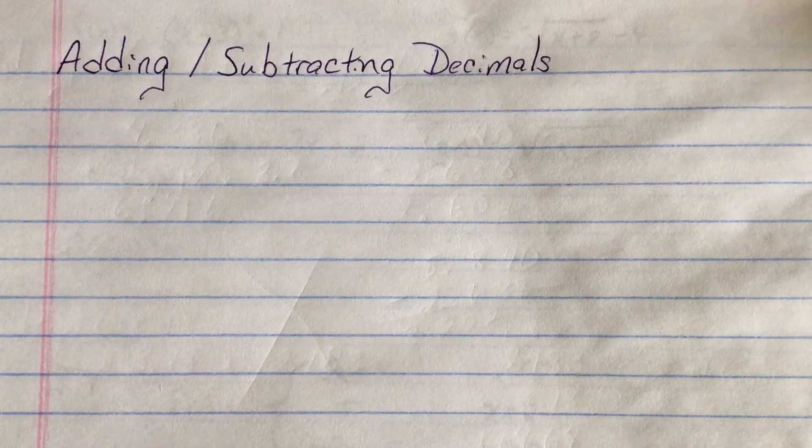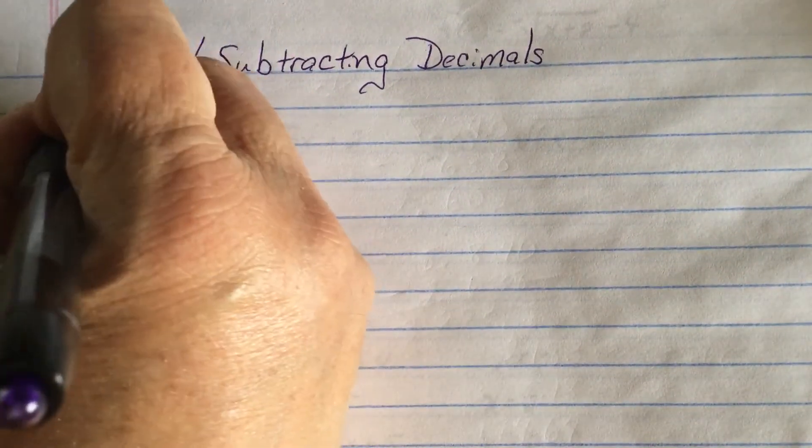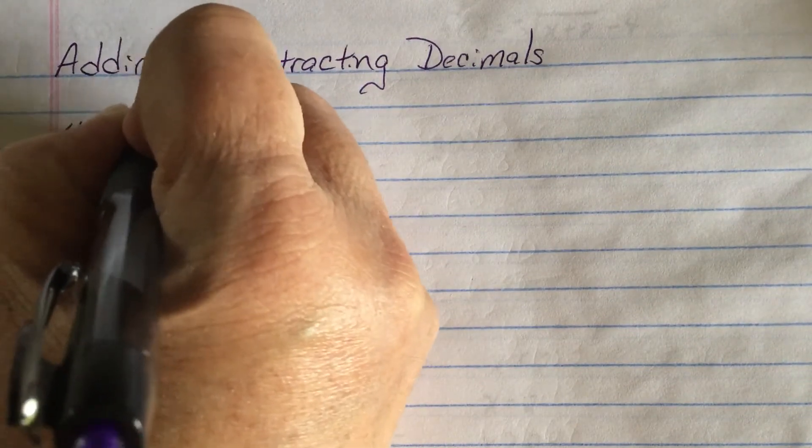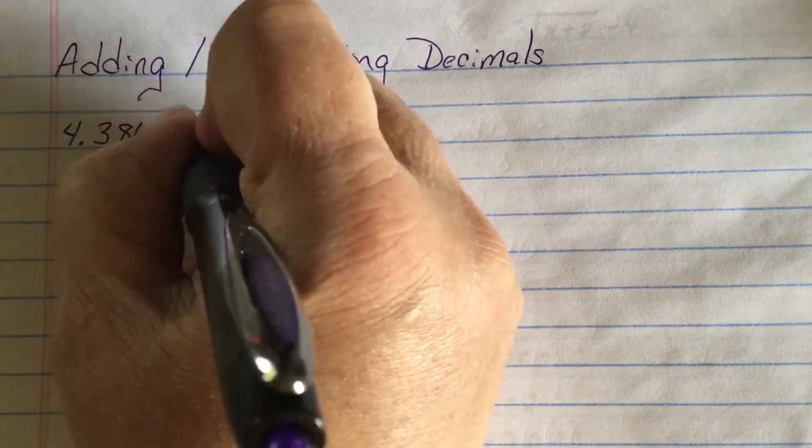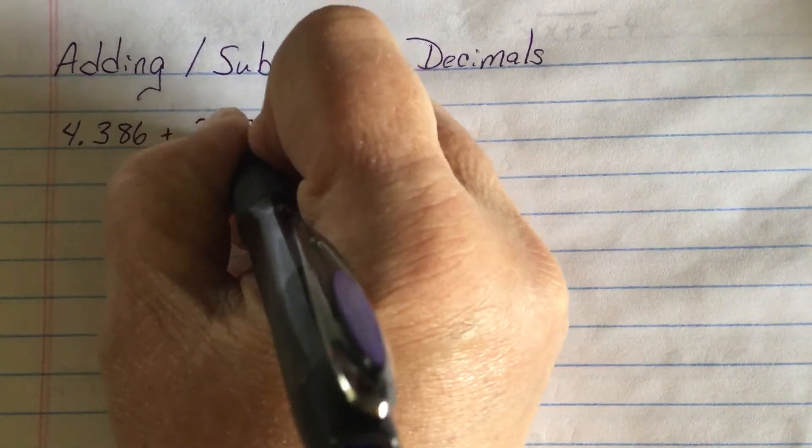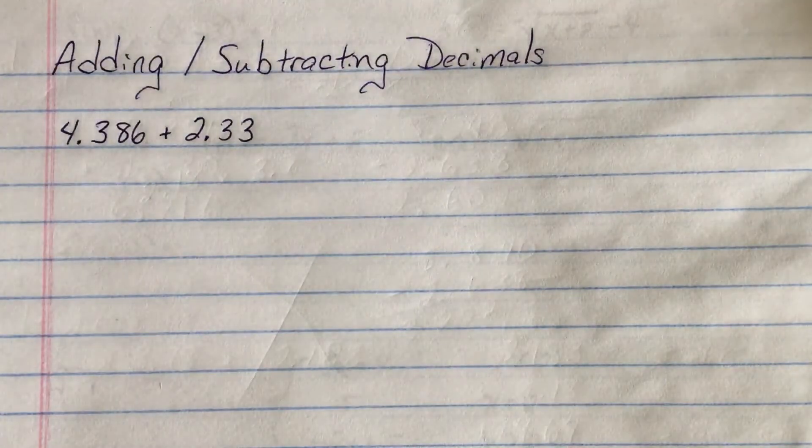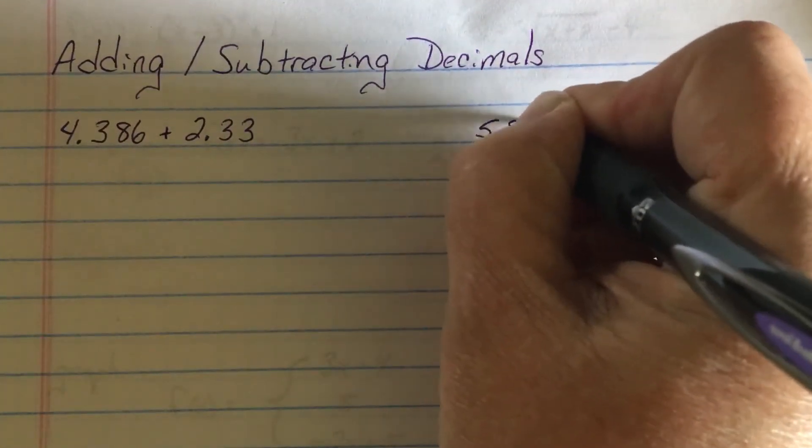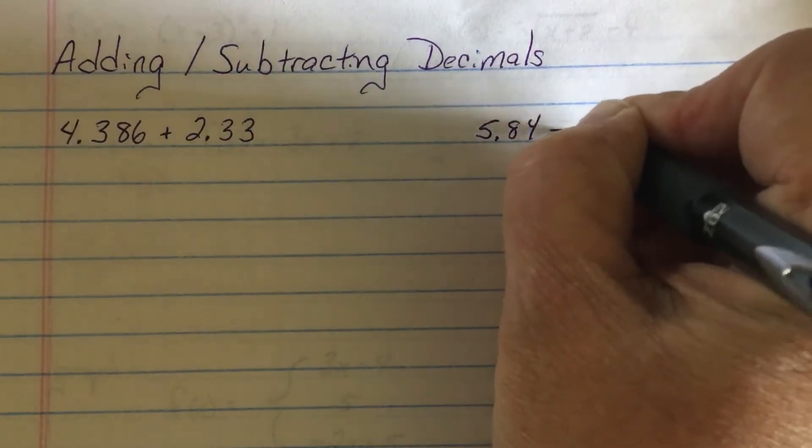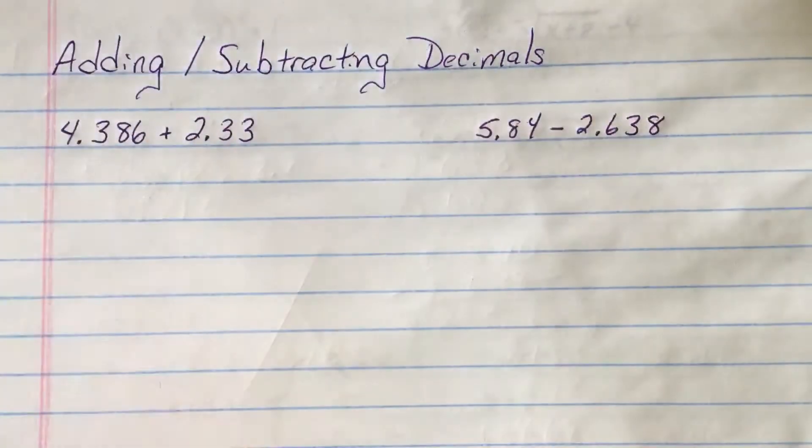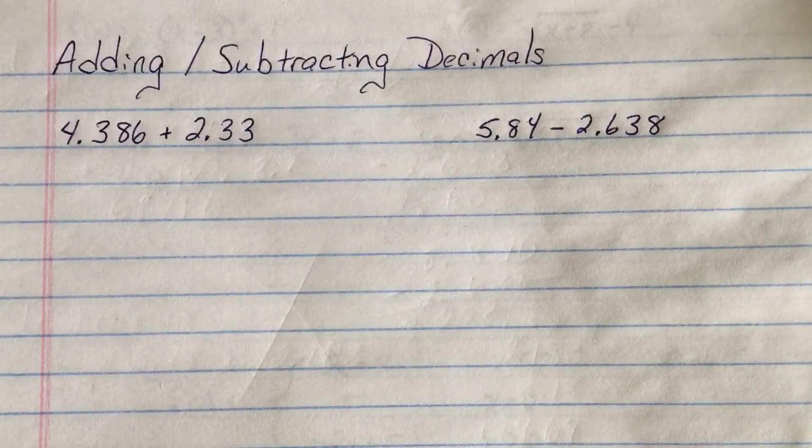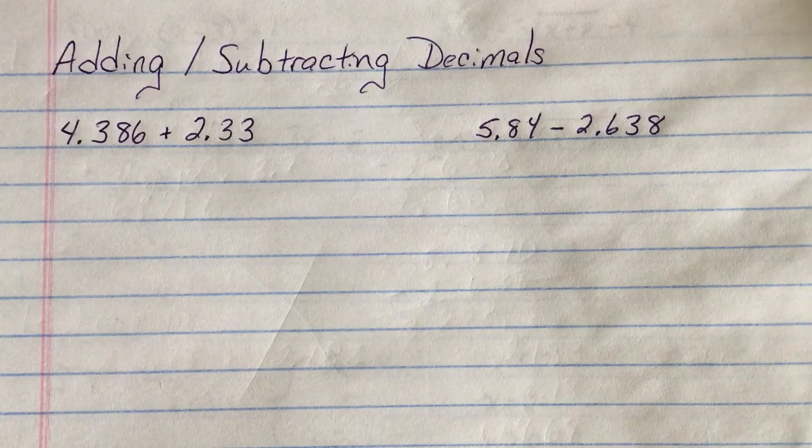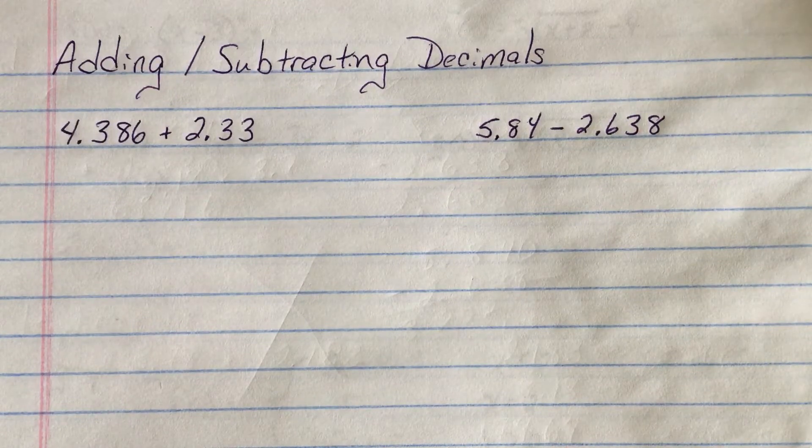When we add and subtract decimals, there's our addition problem. There's our subtraction problem. Well, first thing we do is we're going to line it up vertically. And when we do that, we line up off the decimal, not off of the right.